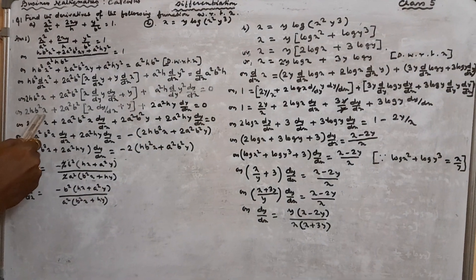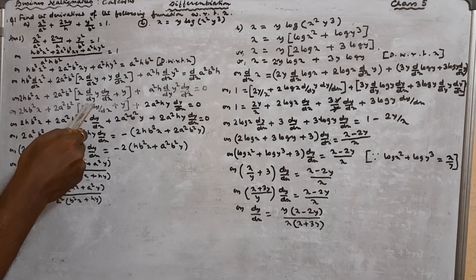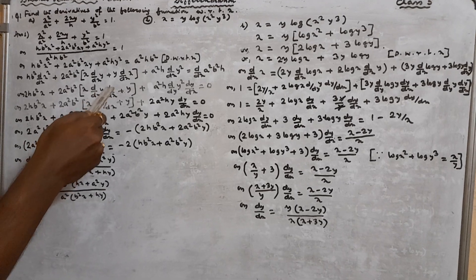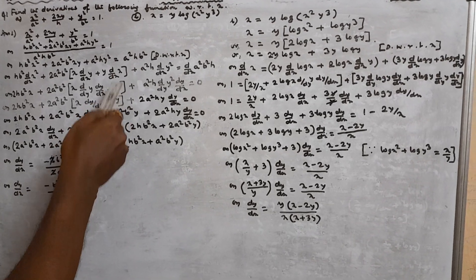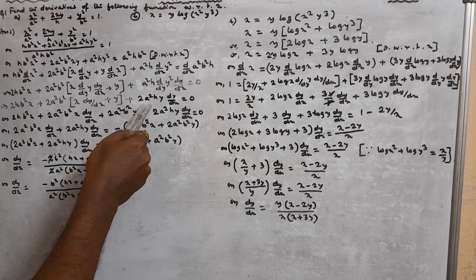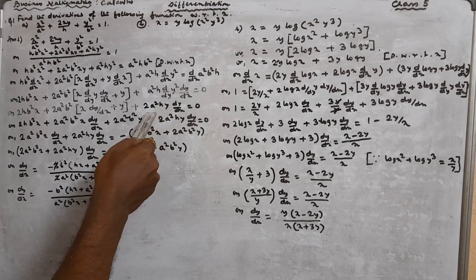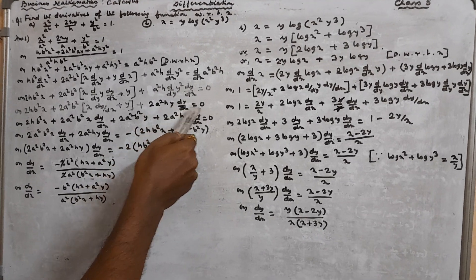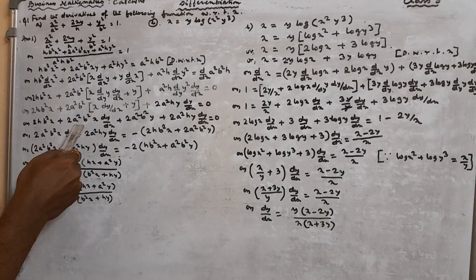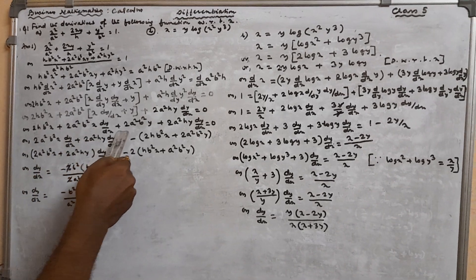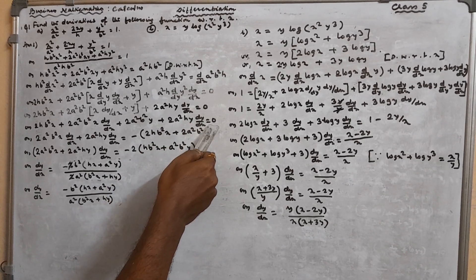So we get: 2HB²X + 2A²B² · [X · dY/dX + Y·1] + 2A²HY · dY/dX = 0. Expanding: 2HB²X + 2A²B²X · dY/dX + 2A²B²Y + 2A²HY · dY/dX = 0.